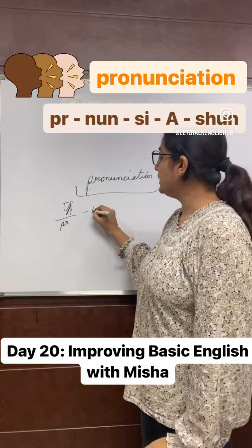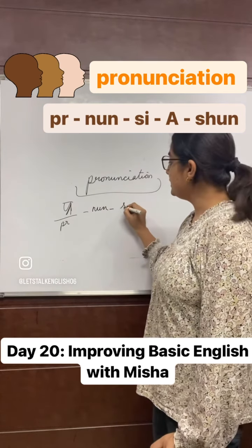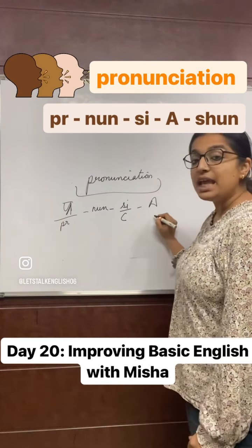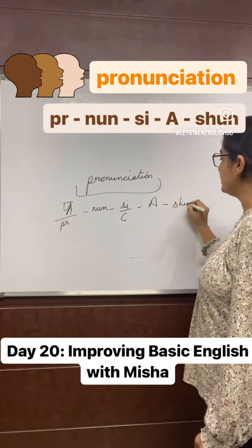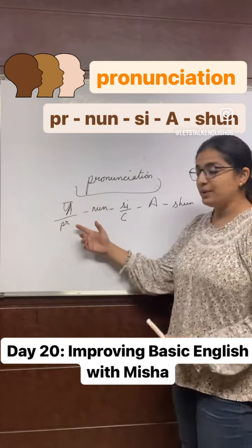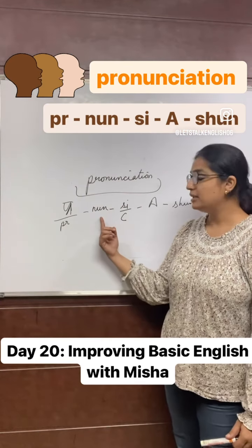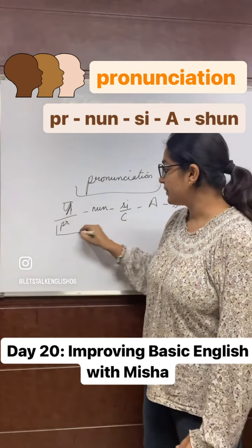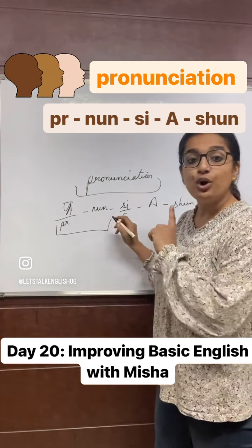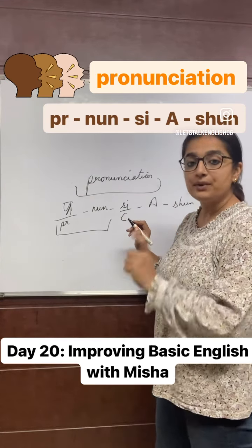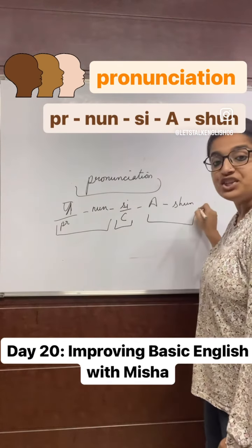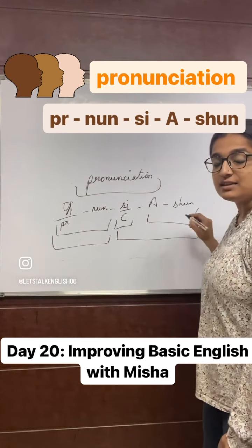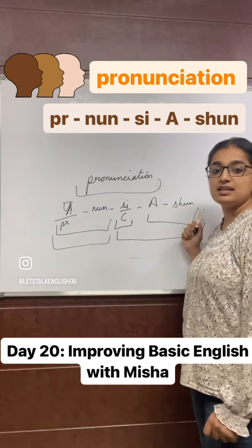So look carefully: it's 'pr', then 'nan', then the sound 'c', then 'a', then 'shun.' Join them slowly: pranan — c — a — shun. Note that this ending is 'sh', not just 's' — it is a 'shun' sound. So: pranan, c, a, shun.